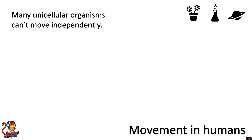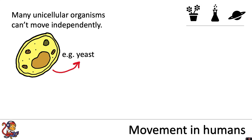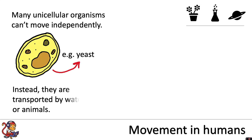Many unicellular organisms can't move independently. For example, yeast. Instead, they are transported by water, air, or animals.